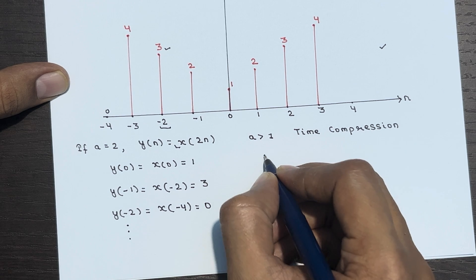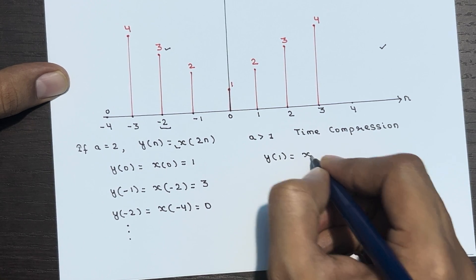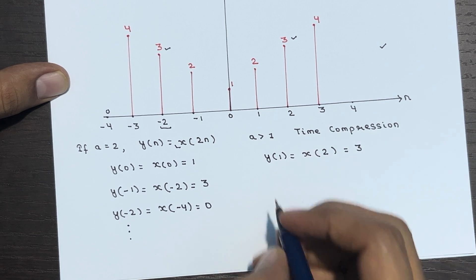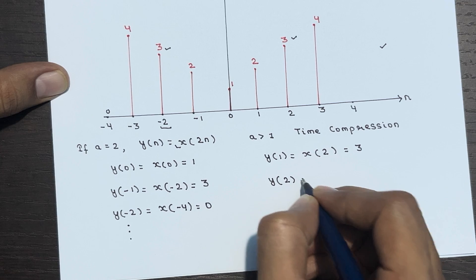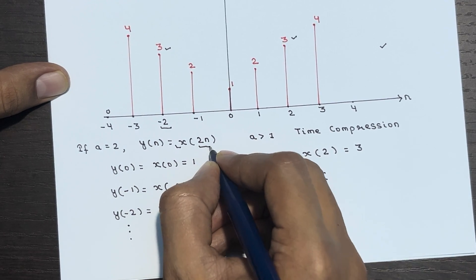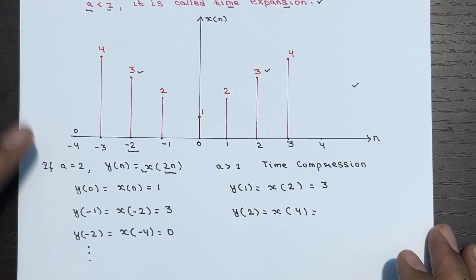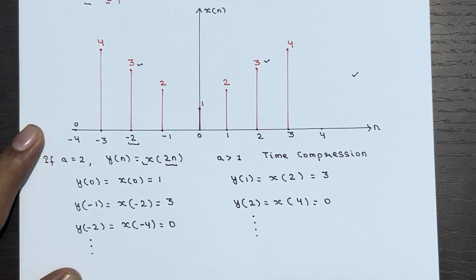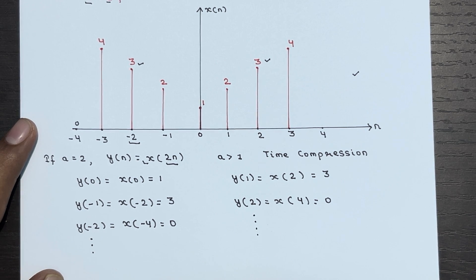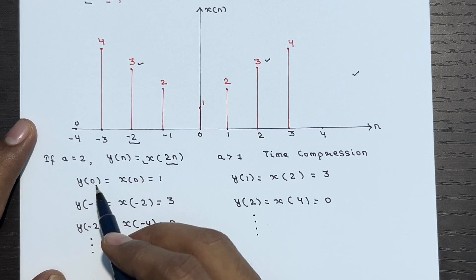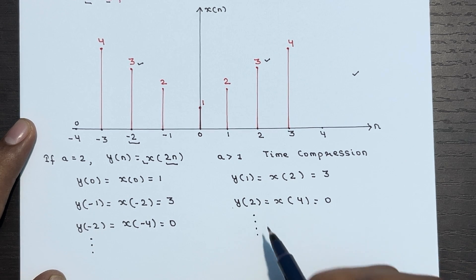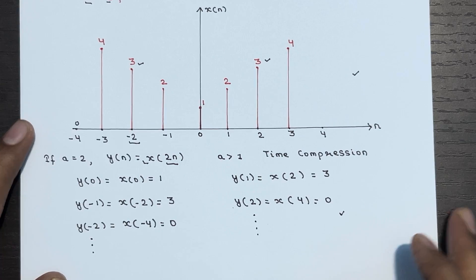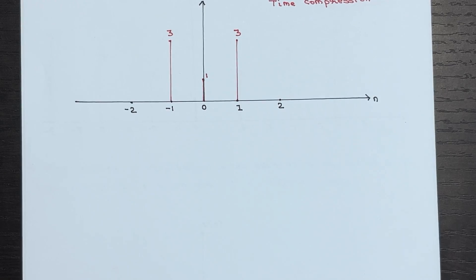On the positive side: Y(2) gives X(-2) which is 3. Y(2) = X(2×2) = X(4), and X(4) = 0. If you go further you get 0 everywhere. So the new signal has values at y(0), y(-1), y(1), and that's all — other places the value is 0.